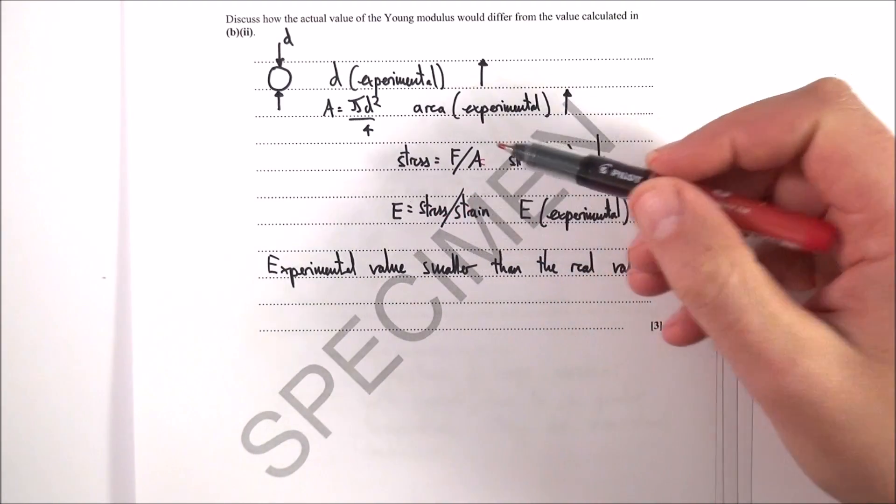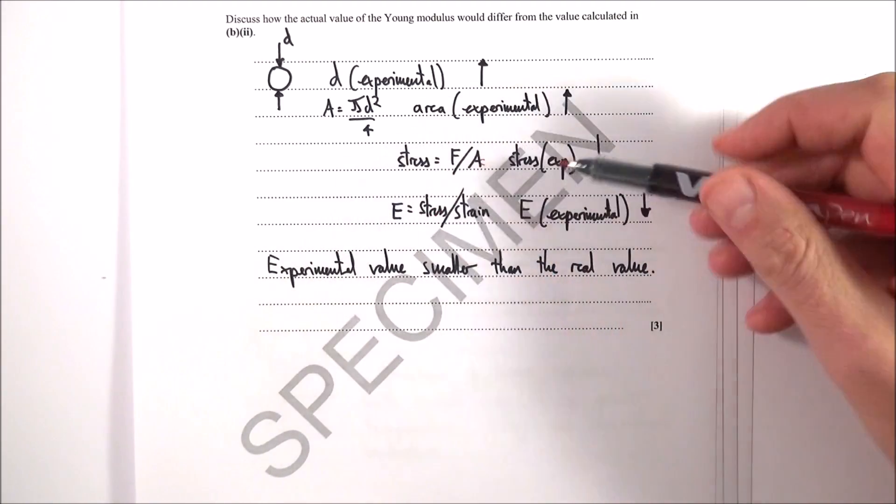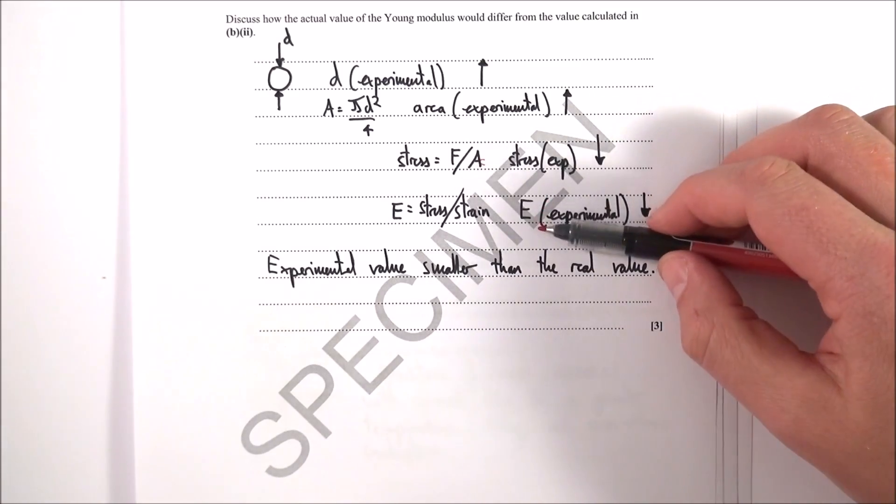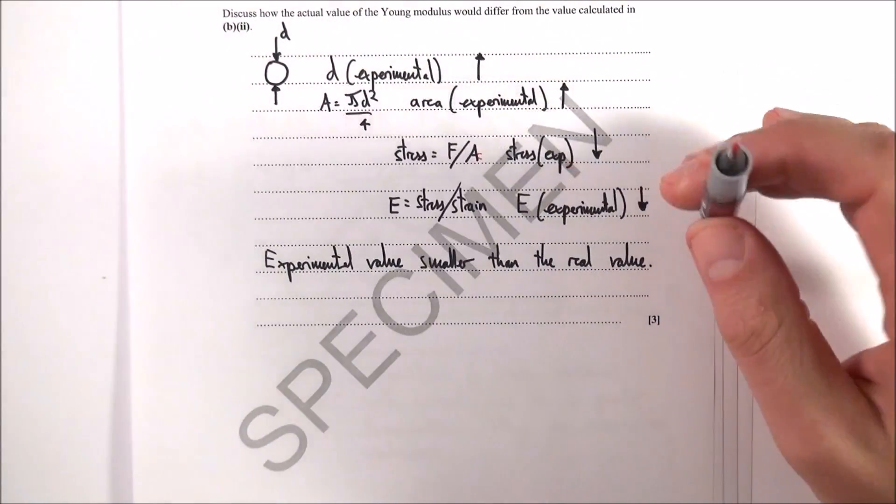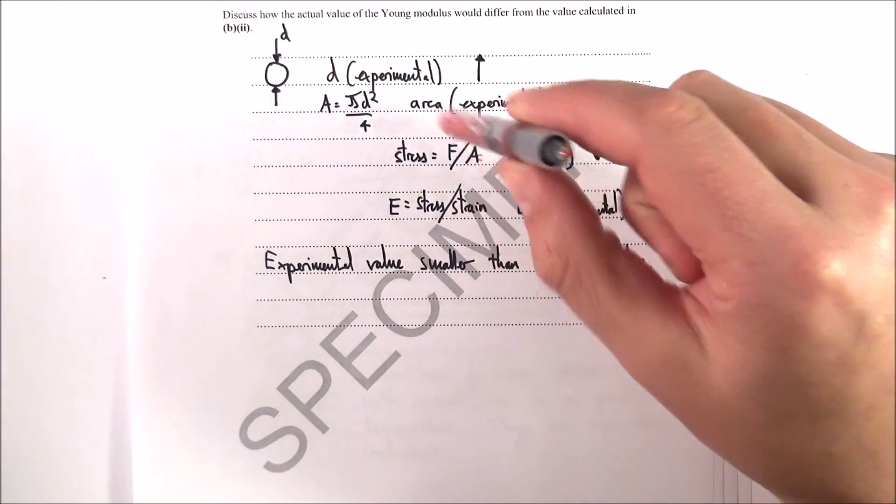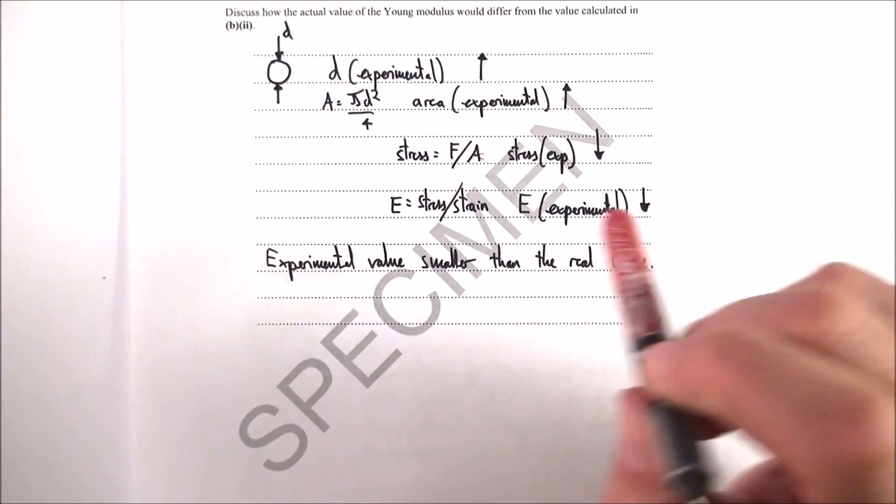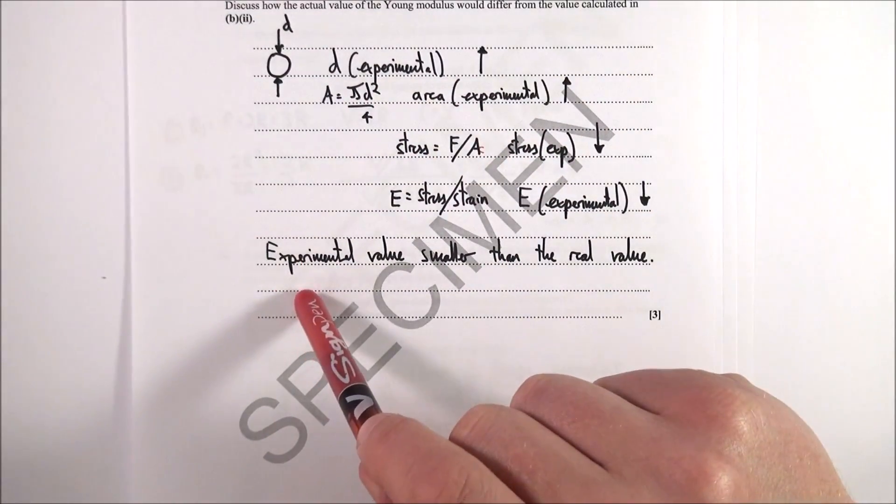Because Young's modulus is equal to the ratio of stress over strain, and strain isn't affected by this reading, if the value of stress was too small, then the value of Young's modulus they got from the experiment was too small. I've done my step-by-step thing, thinking about how this links back to some equations, and therefore his experimental value...